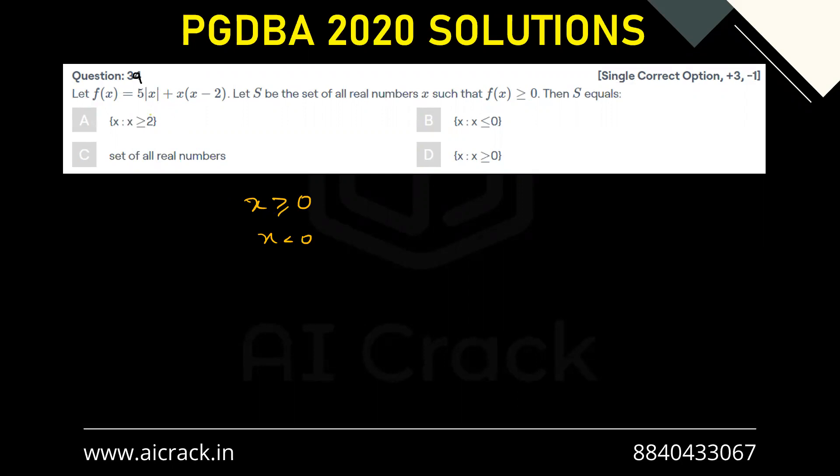This would open as positive, so f(x) = 5x + x² - 2x, which becomes x² + 3x. We need to make it greater than or equal to zero, which gives x...